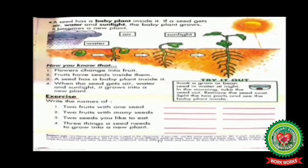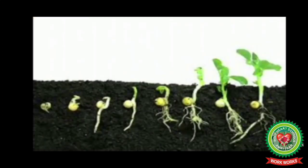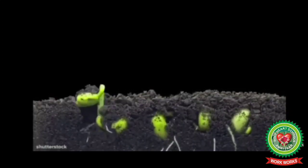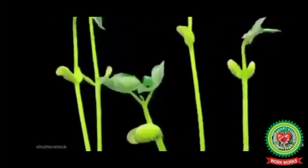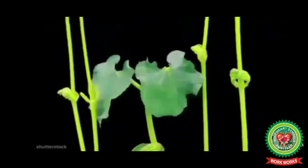Now, coming to page number 11: a seed has a baby plant inside it. If a seed gets air, water, and sunlight, the baby plant grows and becomes a new plant. Seeds are in the soil and slowly and gradually they grow into new plants. This process of a seed growing into a new plant with the help of air, water, and sunlight is called germination.